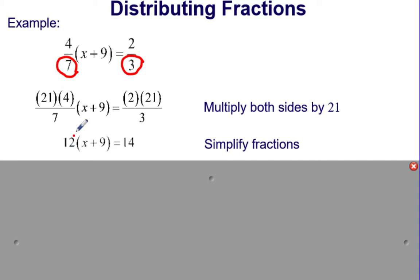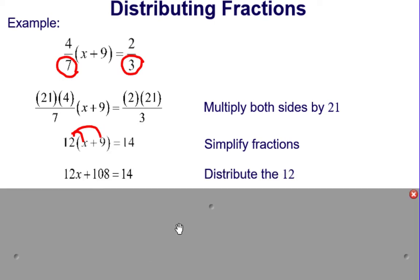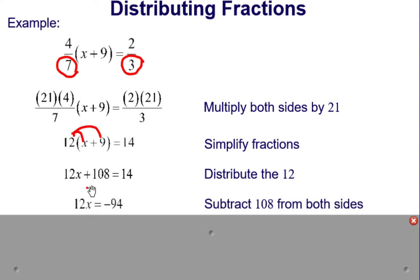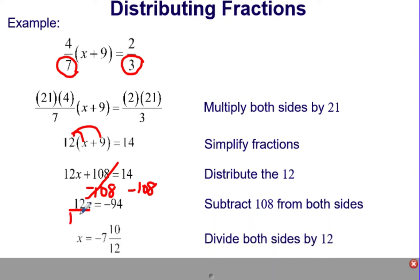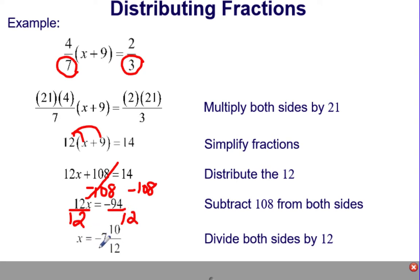We can now distribute the whole number 12 to get 12x plus 108 equals 14. We're going to subtract 108 from both sides to undo the adding 108, which gives us 12x equals negative 94. We're then going to undo the multiplying by 12 by dividing both sides by 12, which gives us, as a mixed number, negative 7 and 10 over 12.